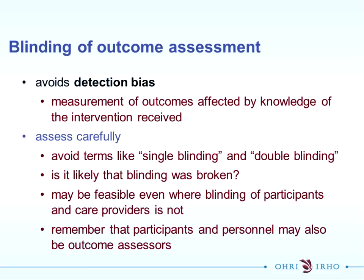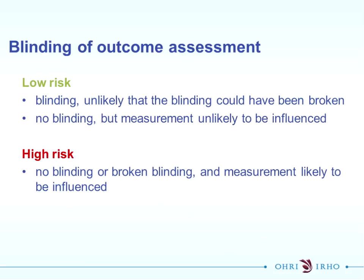Moving on to the next domain: blinding of outcome assessment. Participants and personnel is performance bias, and blinding of outcome assessment is detection bias. It's the measurement of outcomes affected by knowledge of the intervention received. Very similar issues with performance bias regarding wording of single and double blinding. It may be feasible that there is detection bias even when blinding of participants and care providers is not possible. You should remember that participants and personnel may also be outcome assessors.